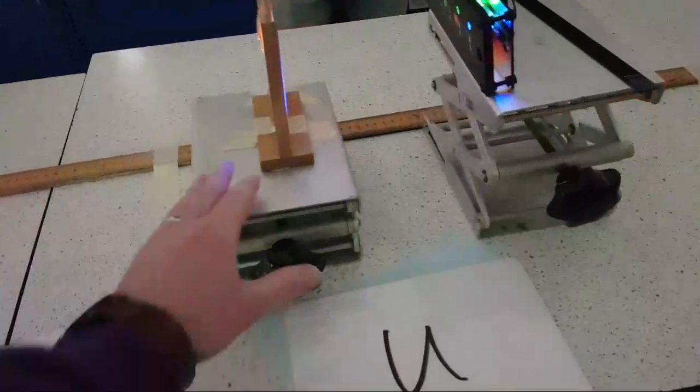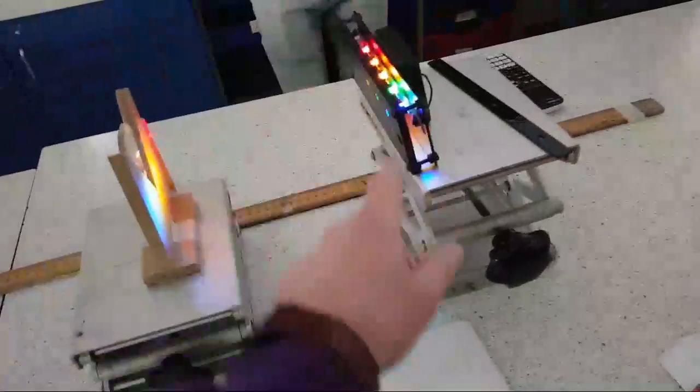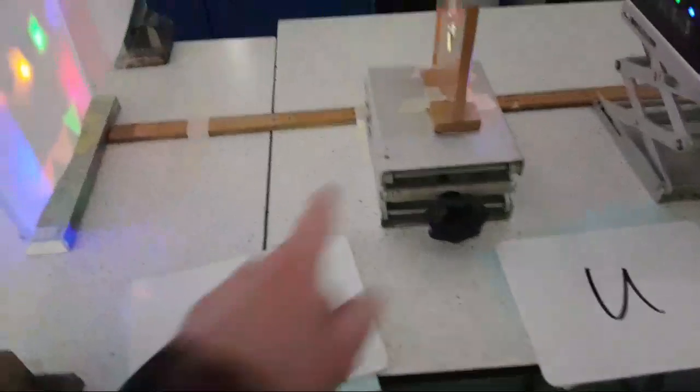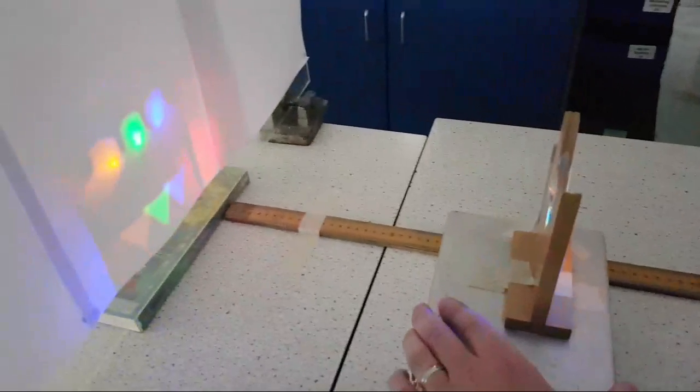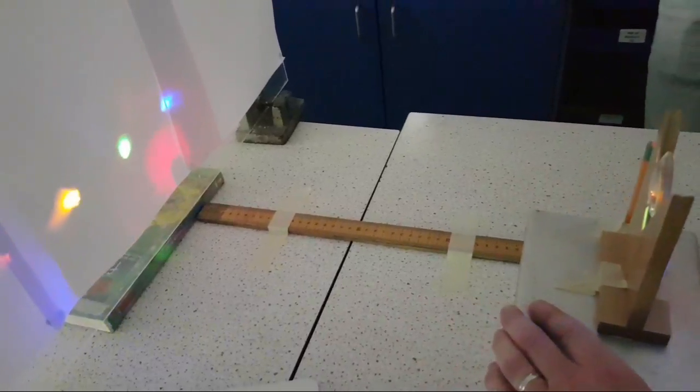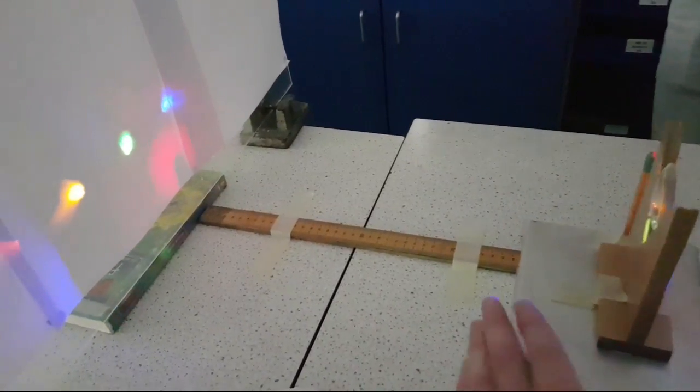Some notation you need to know: this distance between the object and the lens is distance u. This distance between the lens and the image - once we've got a focused image - so if you look when I move the lens I get more or less focused image, just about there.